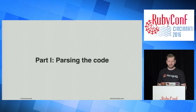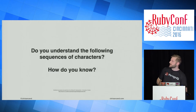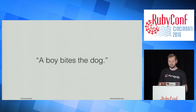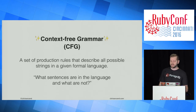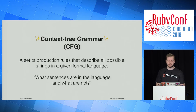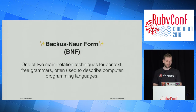This is a high-level overview of how general language parsing works from a grammar, how Ruby does it, and how we're going to do it. Do you understand these sequences of characters, and how do you know? 'The boy owns a dog' — okay. 'A boy bites the dog' — kind of weird, but okay. 'Loves boy the' — not okay. How could you programmatically determine which of those are correct? There's a way: a context-free grammar, or CFG, is a set of rules that describe everything contained within the language — it answers what sentences are in the language and what are not. Backus-Naur form, or BNF, is one of the main notation techniques for describing a CFG.